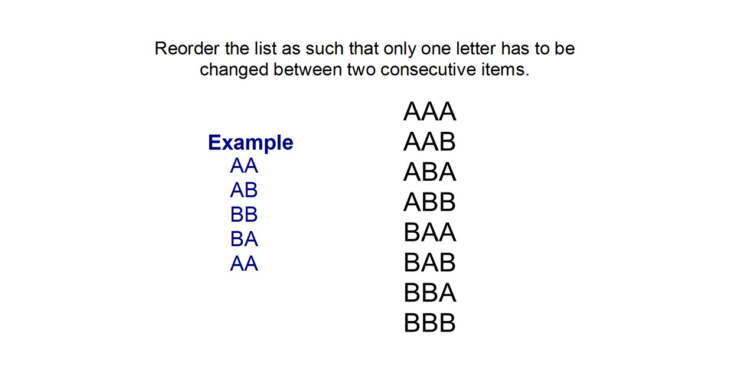In the example I crafted, you have a double A, then the next item is AB, so we did only change one letter. Then AB becomes BB, so we change the left A to B. Then BB becomes BA, and we change the right most B. And BA becomes AA, so we change the left most B, and you can see that we circulate through all the items and come back to the first one.